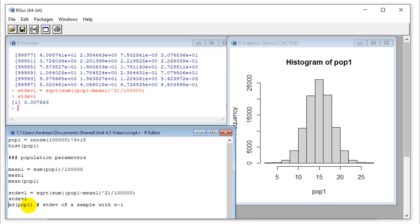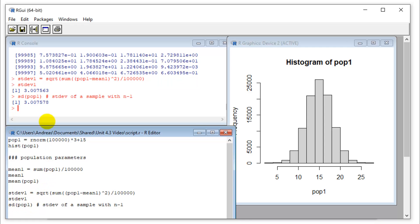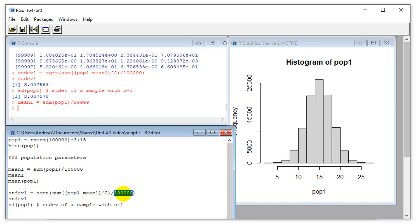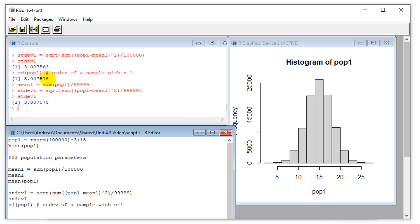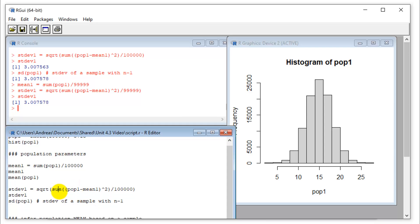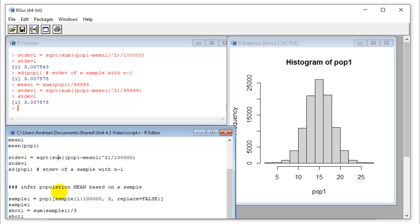So I calculate the difference between the mean and each of those individual trees. Then I square that. So if I just do this, this gives me numbers that are positive and negative. Now if I square this, I get rid of all the negative values. So everything is positive now. I sum them all up, divide by 100,000, take the square root, and I get my true standard deviation. It's going to be 3, as expected. Now I could also calculate this with n minus 1.